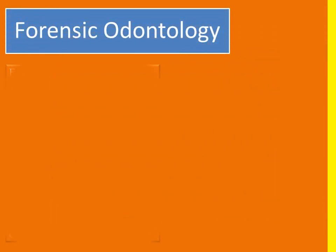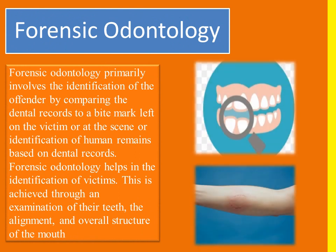The first one is Forensic Odontology. As the name indicates, Forensic Odontology primarily involves the identification of the offender by comparing dental records to a bite mark left on the victim. By comparing dental records, we can identify a person who has committed the crime, and through a bite mark we can also identify the perpetrator. Forensic Odontology also helps in the identification of victims through examination of their teeth, alignment, and the overall structure of the mouth.